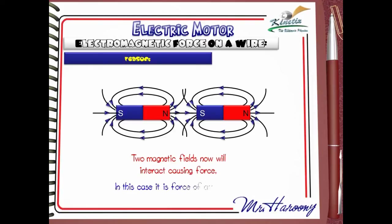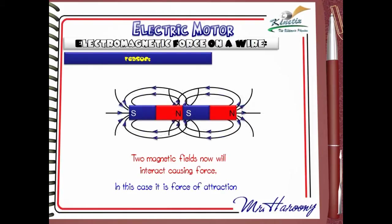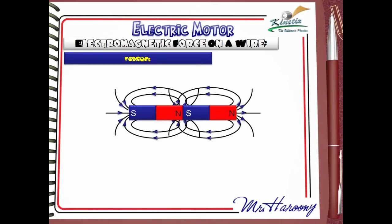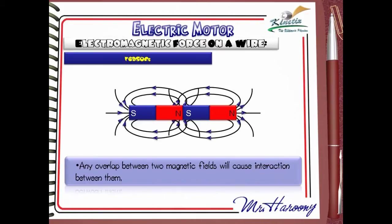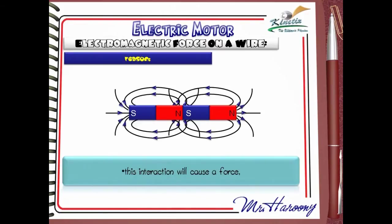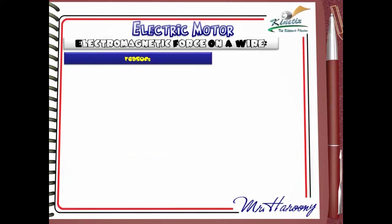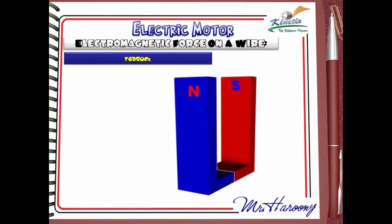In this case the force is one of attraction. This is a simple experiment you can do at home. From this experiment we can conclude that any overlap between two magnetic fields will cause interaction between them, and this interaction will cause a force. Let's keep this conclusion in mind and go back to our original case.